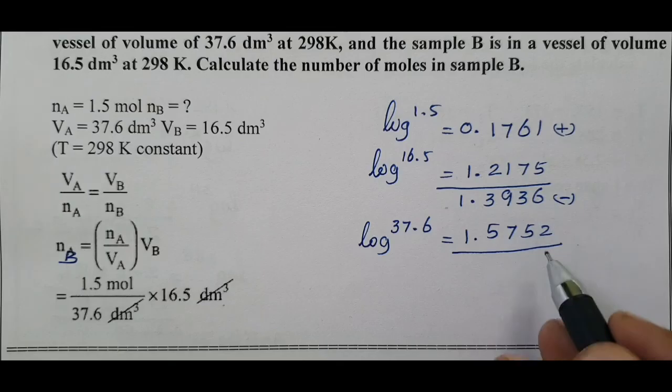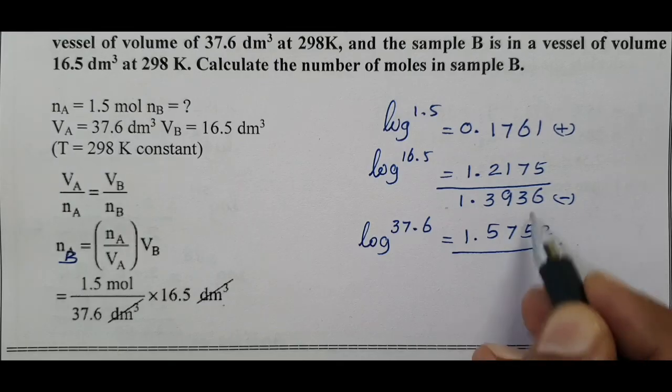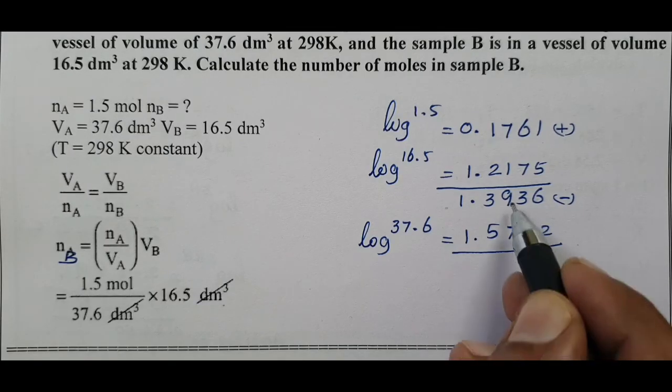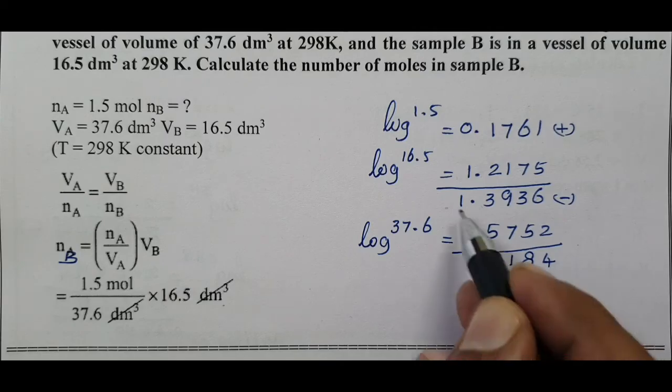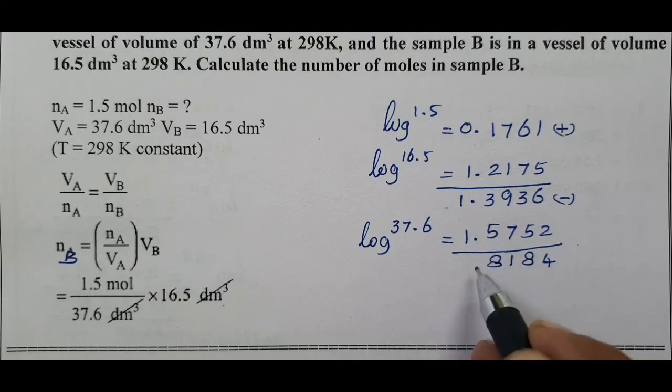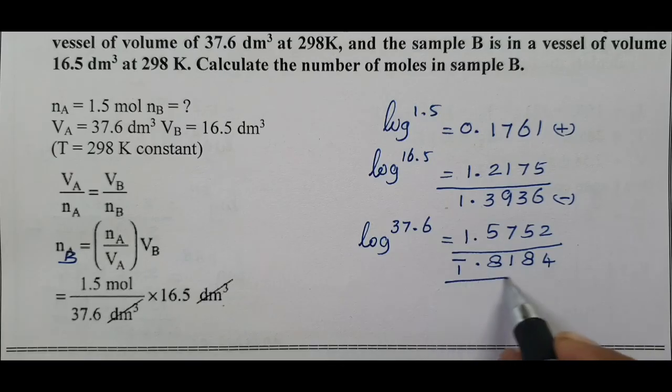6-2 equal to 4, 13-5 equal to 8, 8-7 equal to 1, 13-5 equal to 8. So that's 1̄.8134. If you want to see antilog, you can see 10 power minus 1.